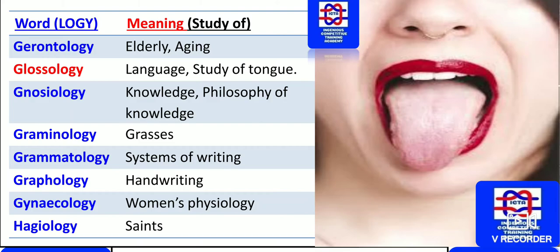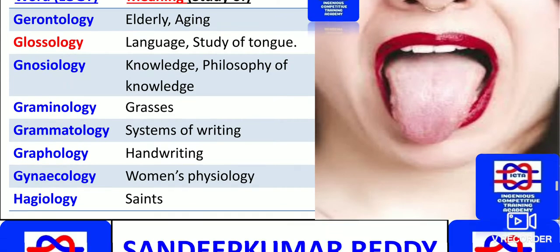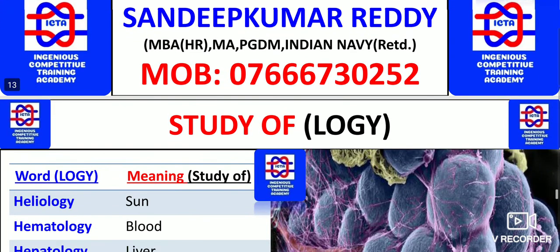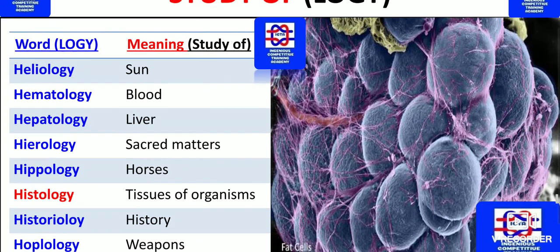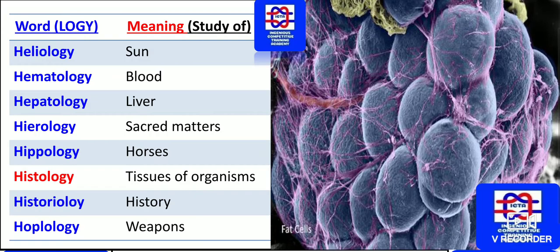Hagiology is the study of saints — these are very useful for all examinations. Helio means sun; the study of the sun is known as heliology. Hemato concerns blood — we have hemoglobin, the pigment inside the blood. The study of blood is hematology.